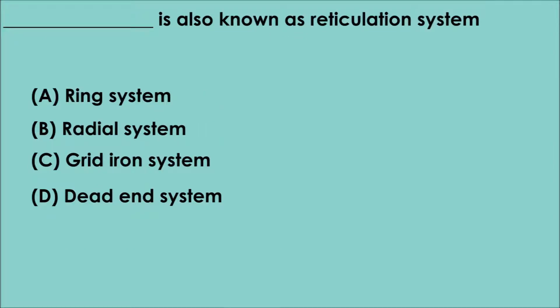Question 5. Fill in the blank: _____ is also known as Reticulation system. A. Ring system. B. Radial system. C. Grid-iron system. D. Dead-end system. The correct answer is option C. Grid-iron system is also known as Reticulation system.